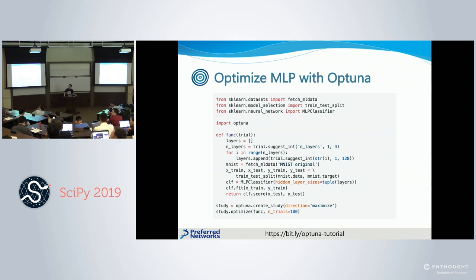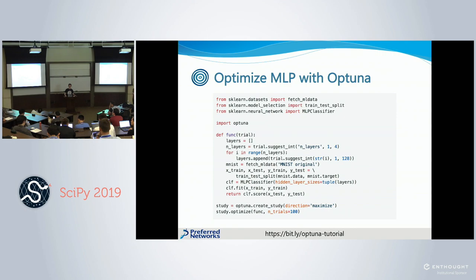Audience question: it looks like in the objective function the data is being loaded every trial — does that mean IO is happening every trial? The answer is that this is just for demonstration purposes; you can move the data loading outside the objective function and it should work fine.